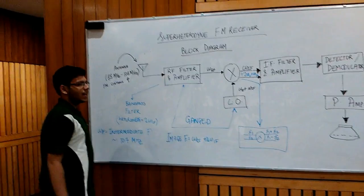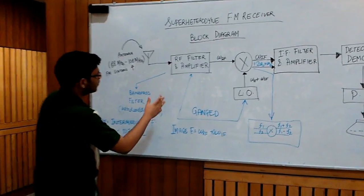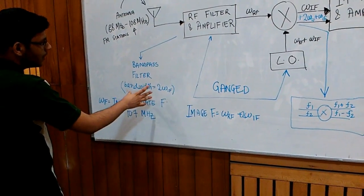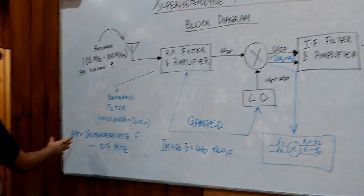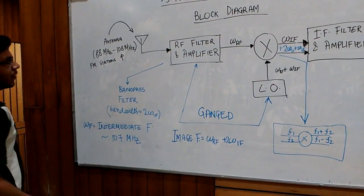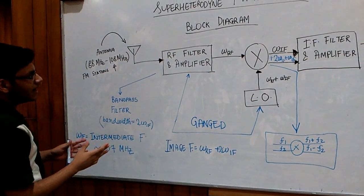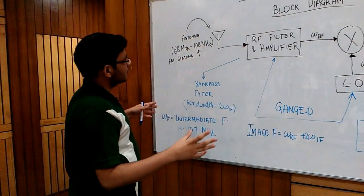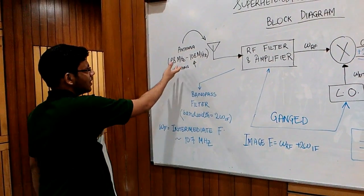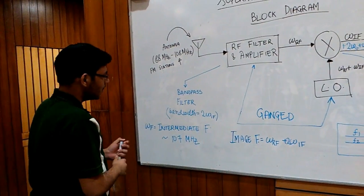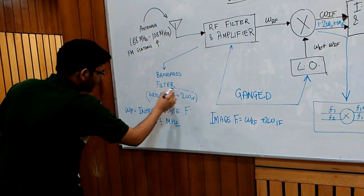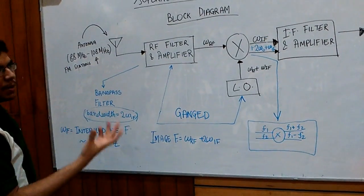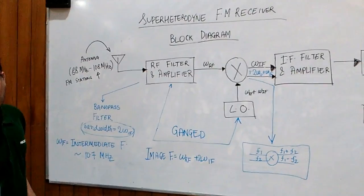Then comes an RF filter and amplifier. What is the basic purpose of this? This filter is a bandpass filter whose bandwidth is approximately 2 omega IF, where omega IF is the intermediate frequency. What it does is that it provides initial selectivity. By which I mean that there is a range of frequencies that are falling on antenna. This is the range of the FM stations. But we want an initial selectivity whose bandwidth is this. So we use an RF filter and further an amplifier to amplify the initial stage of the input signal, which is very low.